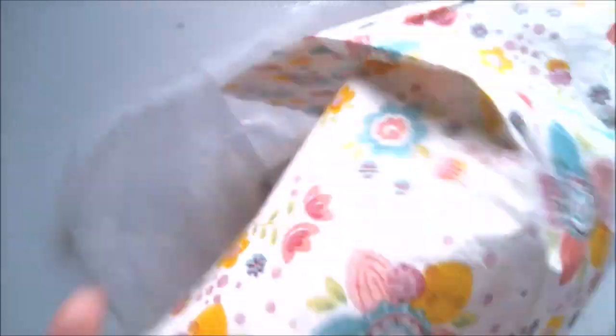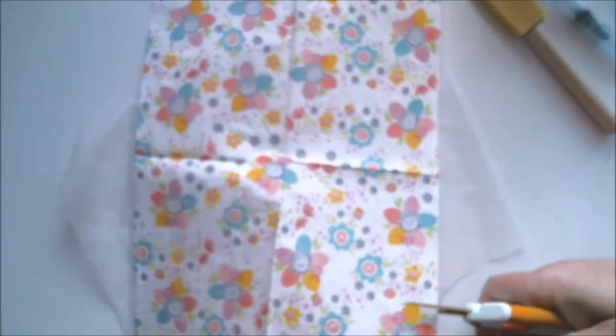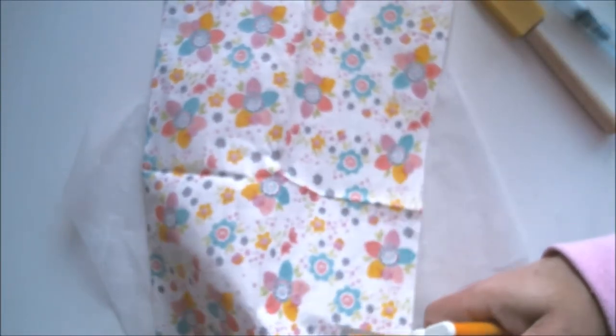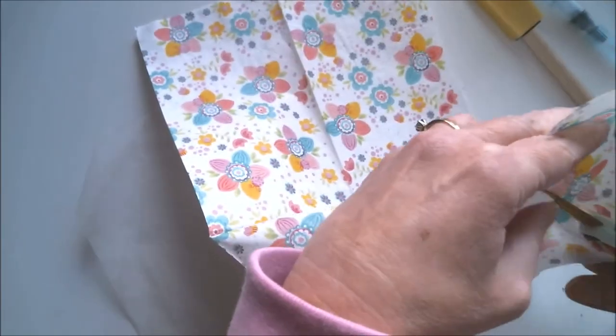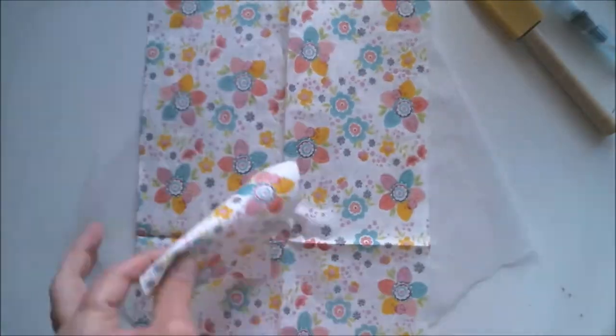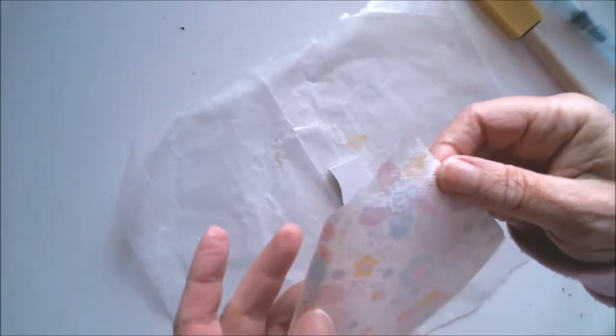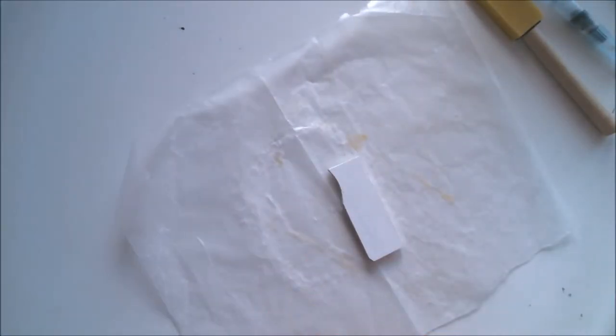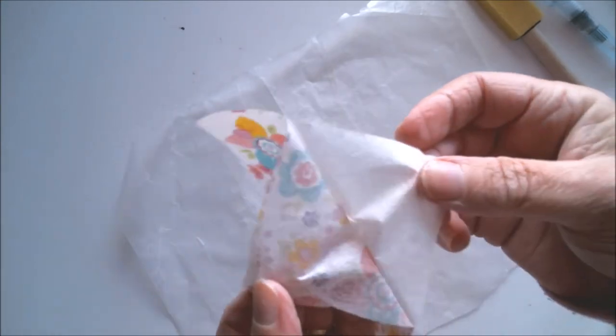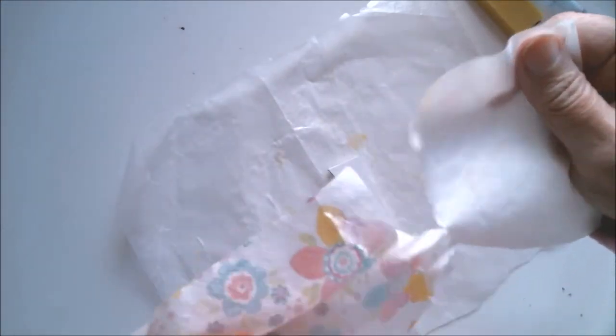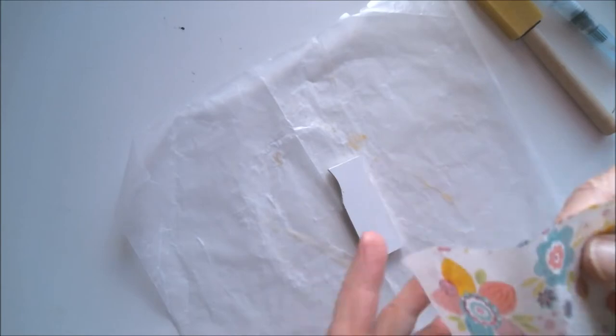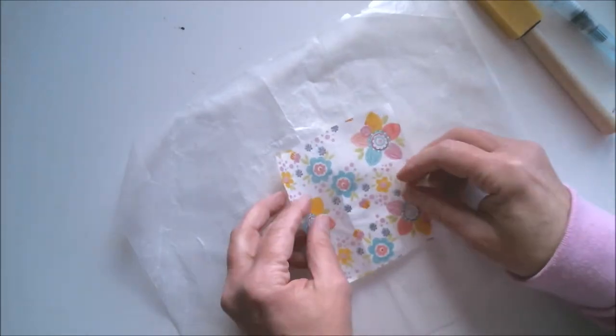For this next one, I'm going to be decoupaging a napkin onto it. You can also do this with tissue paper. So I'm just cutting it down to a smaller piece to make this easier and removing the back layer of the napkin because you only want to use the very front one, and keep in mind that some napkins have two or three layers. It's not always easy to do, but if you dampen one of your fingers, sometimes it helps to pull the napkin layers away from each other.